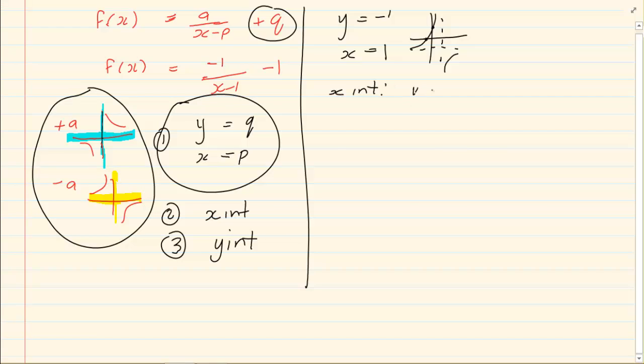Now X intercept means Y is equal to 0. If I substitute into my formula I am going to have 0 is equal to minus 1 over X minus 1 minus 1. Bring my 1 over again it's solving for X. If you are not okay with solving for X.